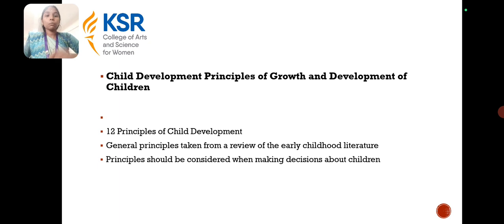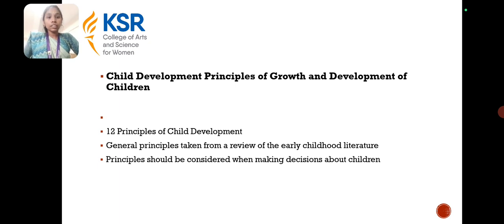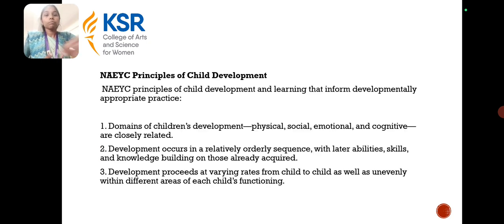In Unit 2, the major topic is child development and principles of growth and development of children. It includes 12 principles of child development, and general principles are taken from a review of the early childhood literature. These principles should be considered when making decisions about children. Here are the NAEYC principles of children.